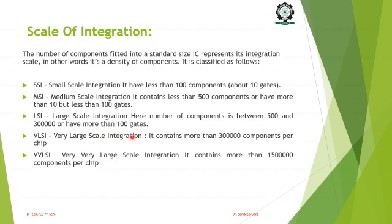Medium scale integration means fabricating more than 100 but less than 500 components on a single chip. Large scale integration means more than 500 but less than 3,000 components. Very large scale integration means more than 3,000 components on a single chip. And very, very large scale integration means more than 15,000 components. As technology advances, the number of components on a chip increases, reducing area, delay, and power consumption and enhancing chip performance.